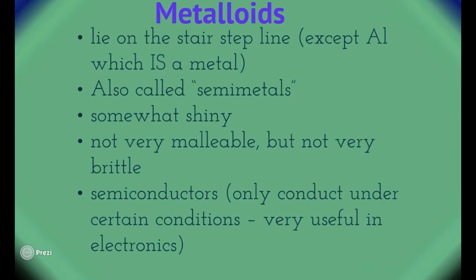Metalloids are hybrids — they share properties of both metals and non-metals. They're not so much metal and not so much non-metal; they're kind of in between. They are brittle but not very malleable either — kind of in between.